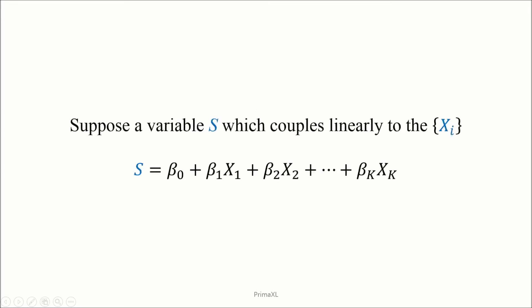Now suppose that there is a variable s, which couples linearly to the independent variables. By linear coupling we mean this functional form. We have independent variables x1, x2, up to xk, of which values are given as data. Then the beta coefficients are multiplied and everything is summed together.